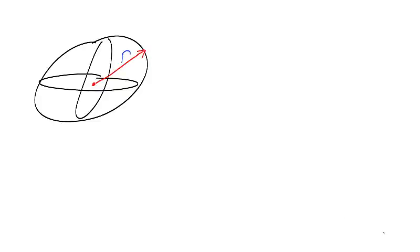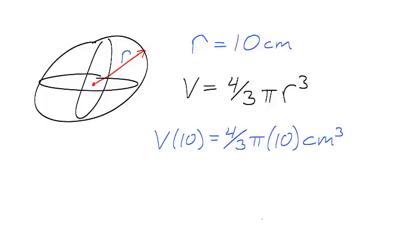For example, suppose an object is roughly spherical and you are able to measure the radius. You take a ruler and measure the radius as 10 centimeters. Using the formula for the volume of a sphere, we can calculate the volume at 10 centimeters.